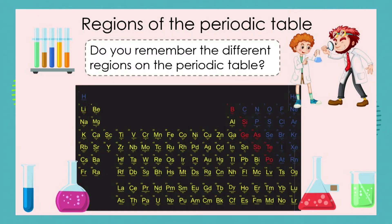Do you remember the three different regions on the periodic table? We divided them up in terms of colour. Can you remember what the most abundant region was? The region illustrated in yellow shows the most amount of different kinds of elements — they are the metals, so our yellow group is made up of metals.